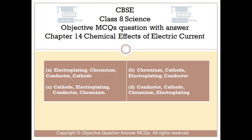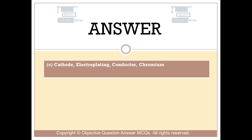Option B: Chromium, Cathode, Electroplating, Conductor. Option C: Cathode, Electroplating, Conductor, Chromium. Option D: Conductor, Cathode, Chromium, Electroplating. The right answer is Option C — Cathode, Electroplating, Conductor, Chromium.